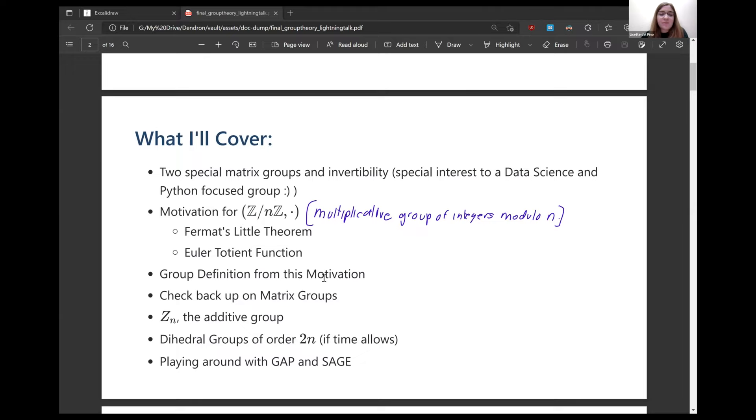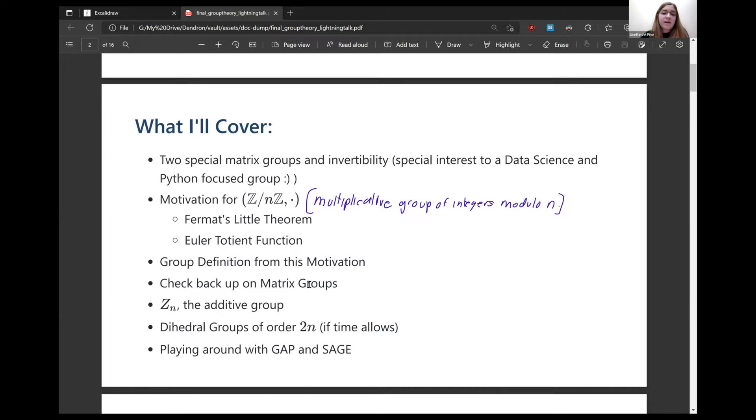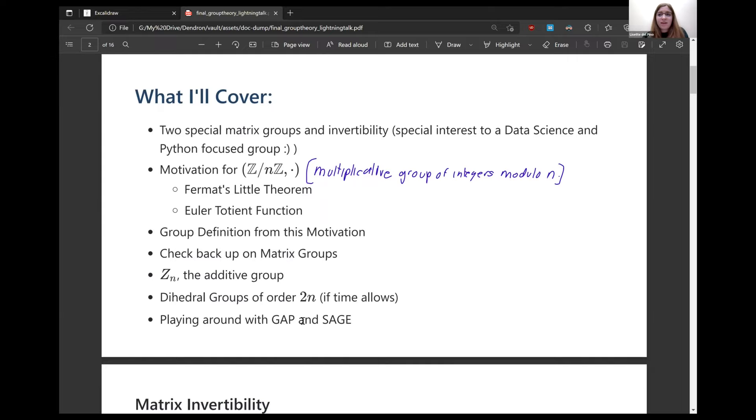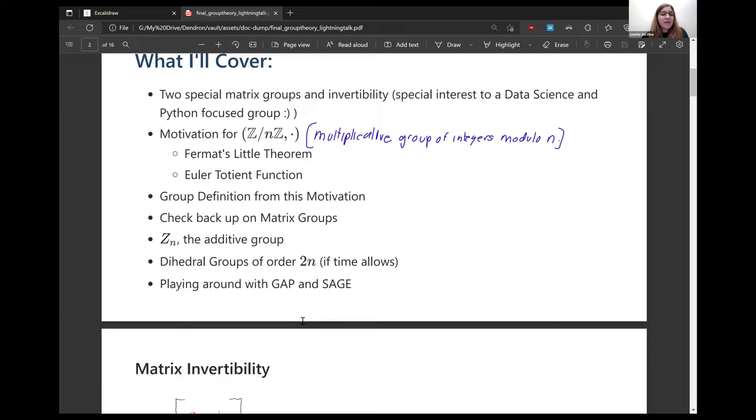I'm also going to get to the multiplicative group of integers modulo n. This has a really rich history. It intertwines Fermat's little theorem and the Euler-Totient function. So for Fermat's little theorem, it's to differentiate it from Fermat's last theorem, but it's incredibly important and it's kind of the powerhouse for RSA encryption.